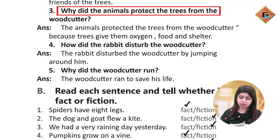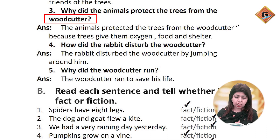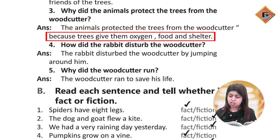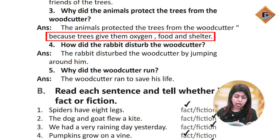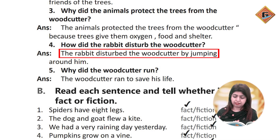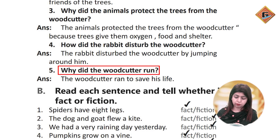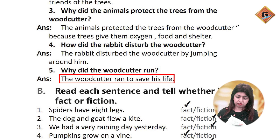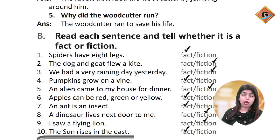Why did the animals protect the trees from the woodcutter? The animals protected the trees from the woodcutter because trees give them oxygen, food, and shelter. How did the rabbit disturb the woodcutter? The rabbit disturbed the woodcutter by jumping around him. Why did the woodcutter run? The woodcutter ran to save his life.